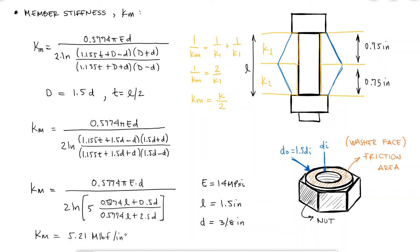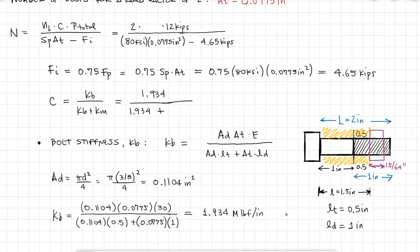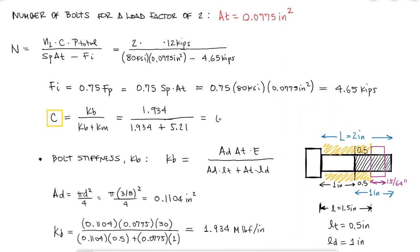And this is all we needed, because with this value, we can go back to find the stiffness constant of the joint, and with it, solve for the number of bolts. If I use 4 bolts, the load factor will not be 2, and therefore I have to round up.